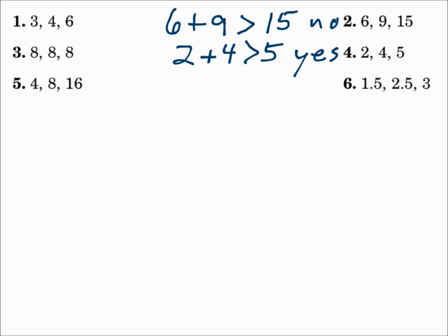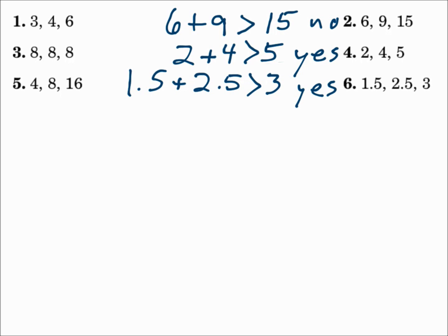Number 6: side lengths 1.5, 2.5, and 3. Is 1.5 plus 2.5 greater than 3? 4 is greater than 3, so yes, you can make a triangle with those side lengths. To check, do the small side length plus the medium side length, and that has to be greater than the large side length. Equal is not good enough — it has to be greater than.